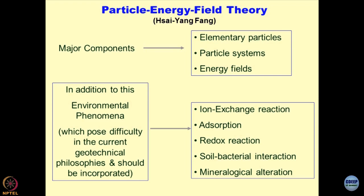If you have these types of questions in mind, as discussed in the previous lecture — ion exchange, ion reaction, adsorption, redox reaction, soil-bacterial interaction, mineralogical alteration — all these issues have to be addressed. These are good examples of how a geomaterial would interact with a given energy field. For instance, the reaction between a geomaterial and a chemical flux involves ion exchange reactions, sometimes called the cation exchange capacity of the material. This quantifies the interaction between geomaterials and energy fields.